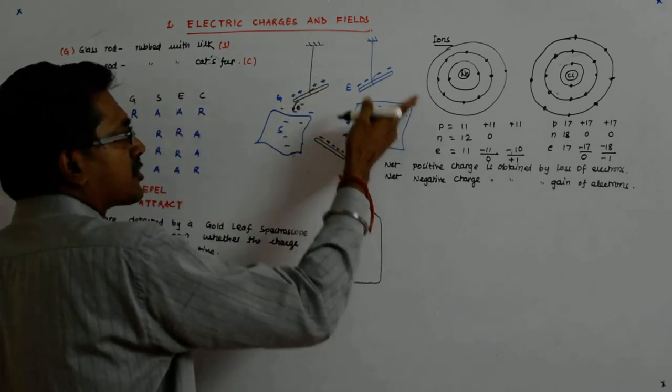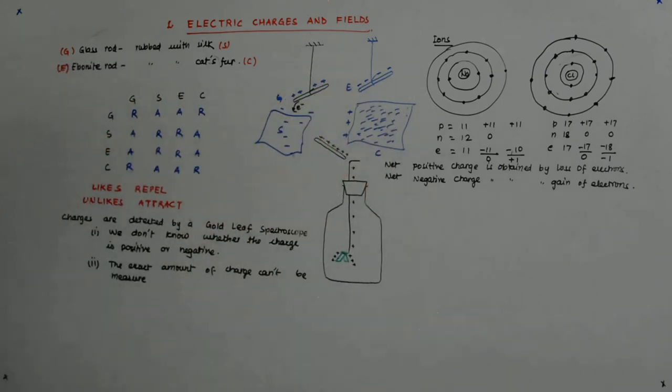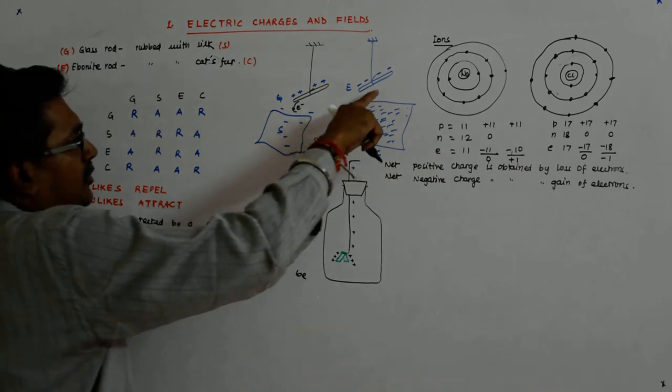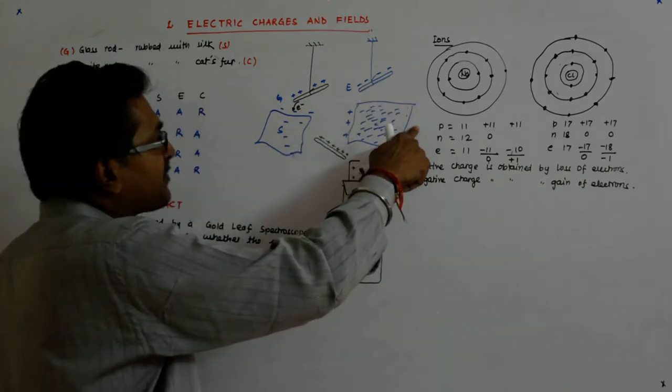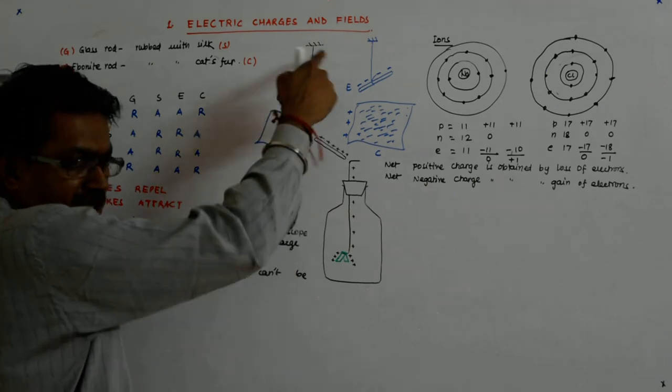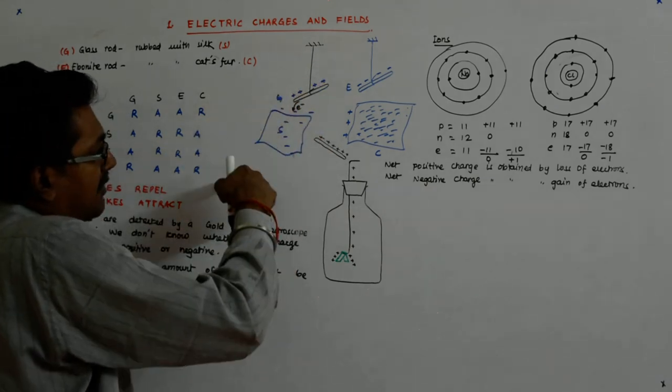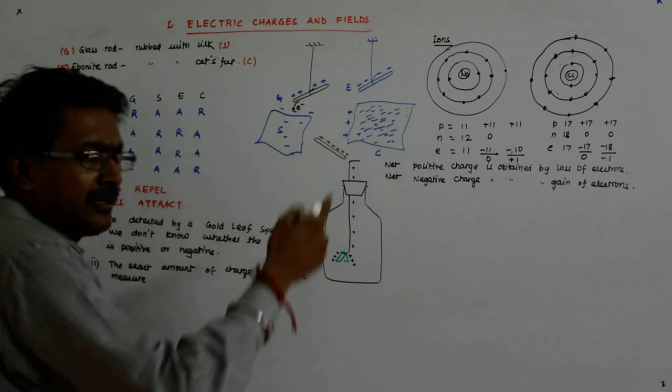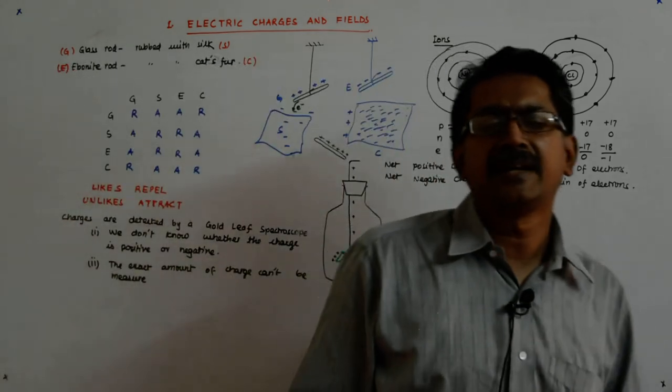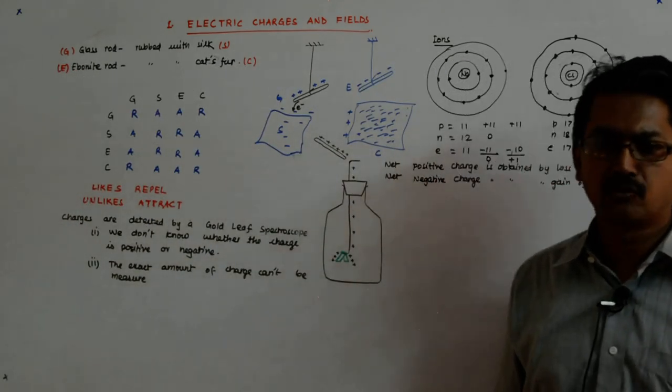Here the opposite must have happened. Some electrons must have jumped from the cat's fur to the ebonite rod, and that's why this became negative and this became positive. It was no wonder the moment you touched them, the electron which had come from here actually went back and made everything neutral as it was earlier.